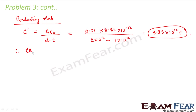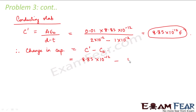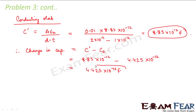So what would have been the change in capacitance in this case? The change in capacitance is C' − C₀, which is 8.85×10⁻¹² minus 4.425×10⁻¹², giving 4.425×10⁻¹² farads. This is how we solve problems related to capacitors.